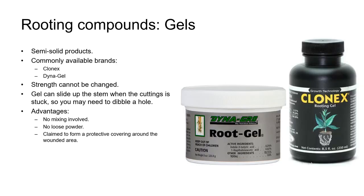And lastly, gels. Gels are semi-solid products, usually in a cellulose base, and they stick to whichever plant part they're applied to. Commonly available brands include Clonex and Dynagro. An advantage of gels is that no mixing is involved — they're ready to use and there's no loose powder to blow around. Some manufacturers claim that the gel forms a protective covering around the wounded area at the base of a cutting and protects it from pathogens, but there's no scientific research that backs up these claims. One of the big disadvantages of gels is that you can't change the strength, and given that the auxin strength is relatively weak in these products, you're limited to using them for material that roots pretty easily. The gel can also slide up the stem of a cutting when you're sticking it, so you may need to dibble a hole first, and then press the substrate back around the base of the cuttings.